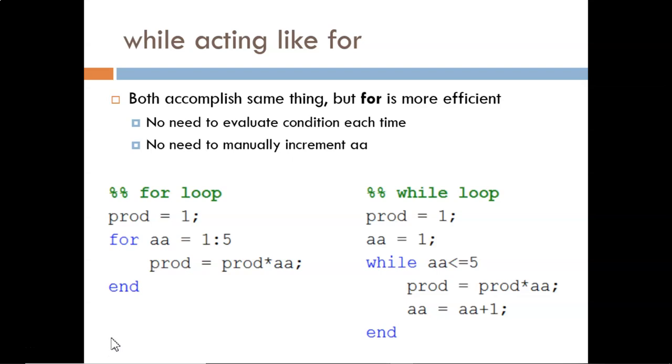We have studied this for loop example before. We know that for each iteration, AA will take on a different number from 1 to 5, and then product will be multiplied by this value each time.